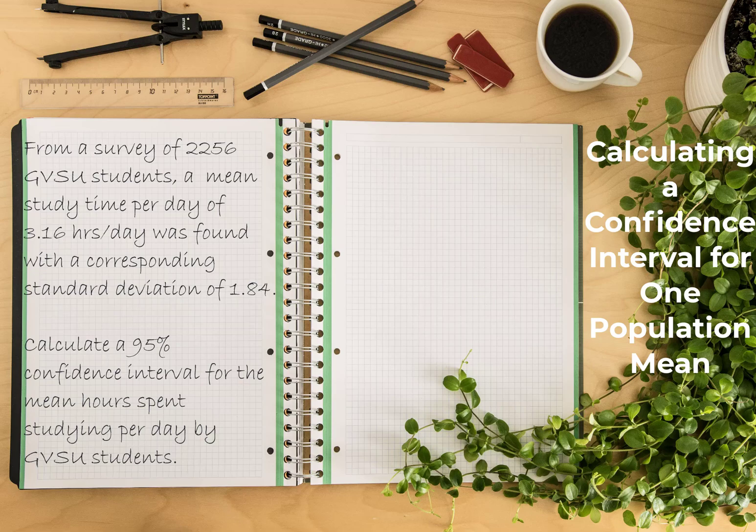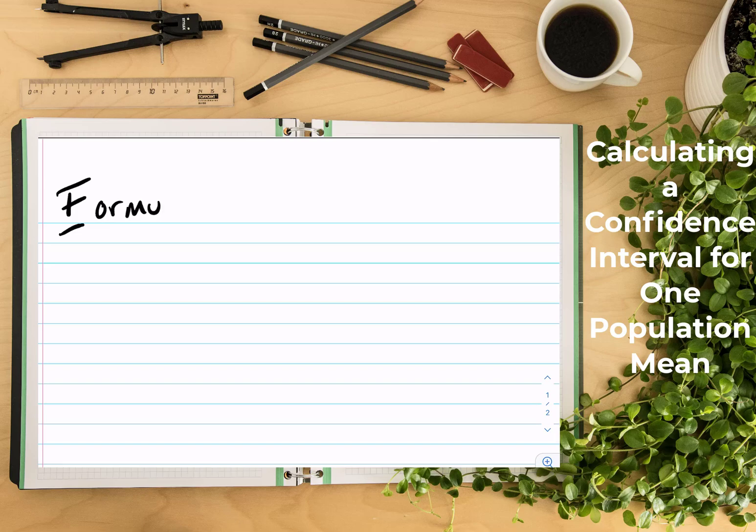So we'll be using the FRED method, and remember with FRED you start with the F, and that would be formulating the problem. When you formulate your problem, you're going to state the population, sample, variable, and then parameter.